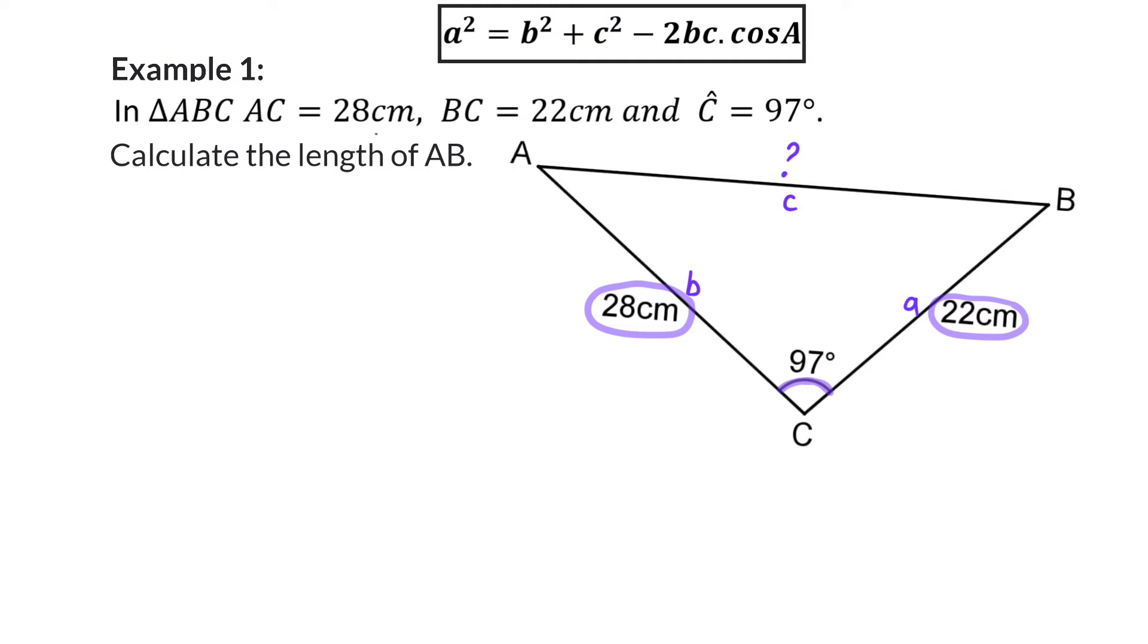The cos rule then starts with the side that we want to determine, in our case, side C, squared. This will then be equal to the other two sides squared and added up, which will be B squared and A squared. From this, we then subtract two times the product of B and A, multiplied with cos of the included angle, which in our case is angle C.